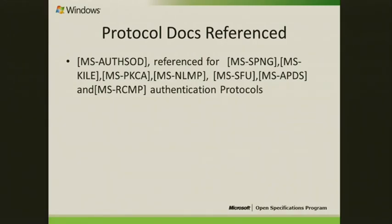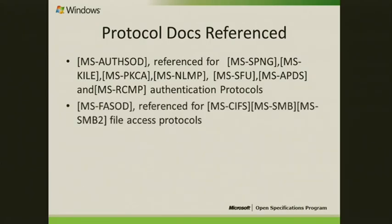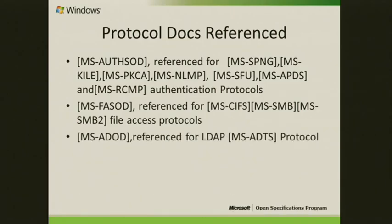The LGOD document connects to other documents for authentication information, and for these protocols it is referenced to provide authentication information. For file system — in a CBAC example, file scenarios are taken. For information on the file system protocols, it is tied to FSOD, the File Access System Overview Document, which connects to the member technical documents: CIFS, SMB, and SMB2 protocols.